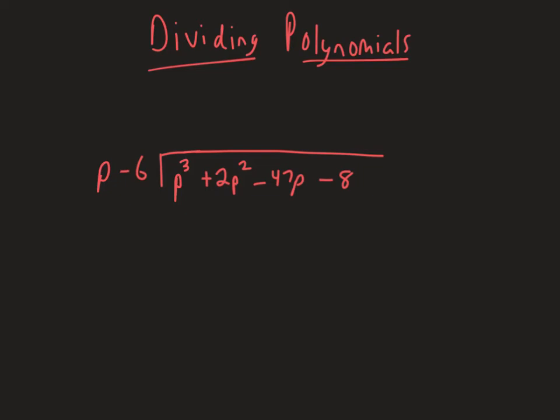Alright guys, so this is going to be dividing polynomials, so it's a little bit more complicated than it would be just to multiply or add or subtract. There's actually two methods that we can use, and just for reference, the problem would have been written as taking this large polynomial and then dividing it by p minus 6.